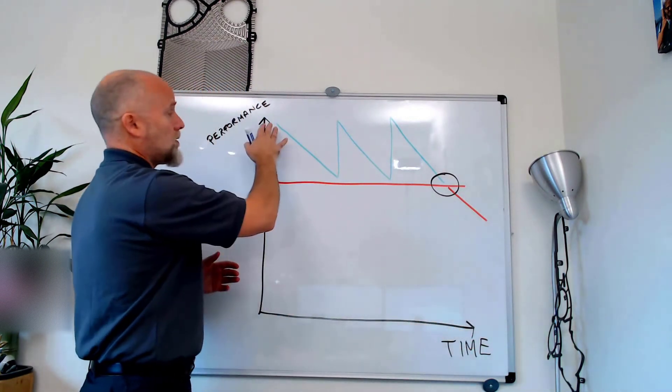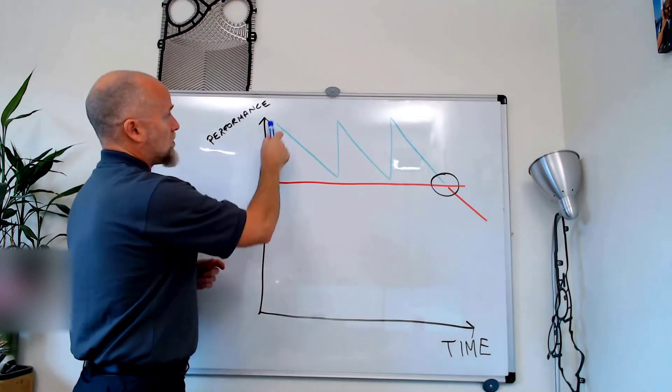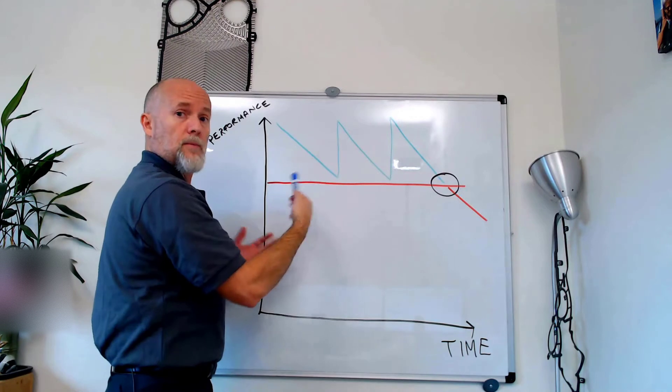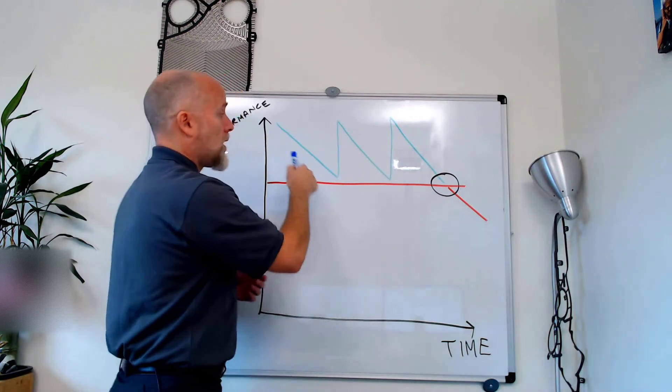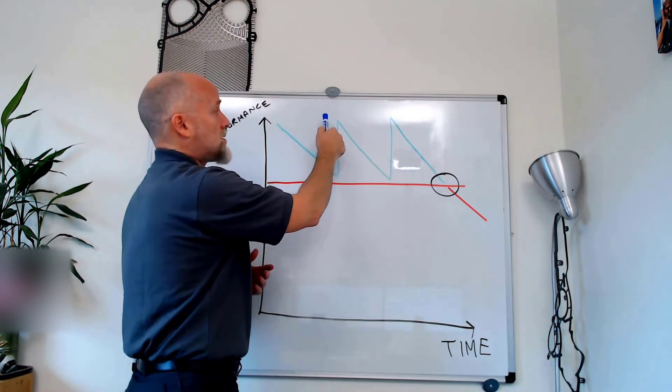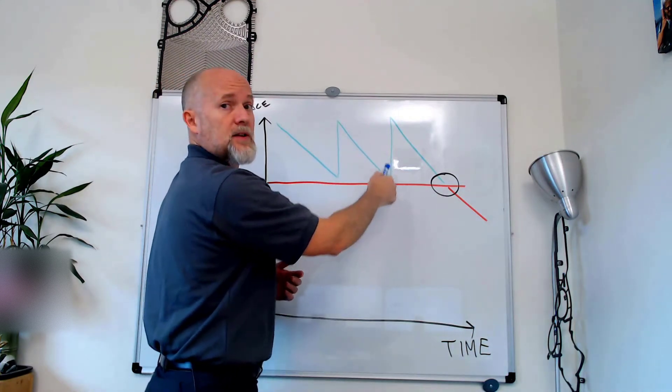So you start with a new heat exchanger and of course you have the top performances. And then as time goes by the heat exchanger fouls up and then you run a CIP and you bring it back to the original performances. Then in time it fouls up again.